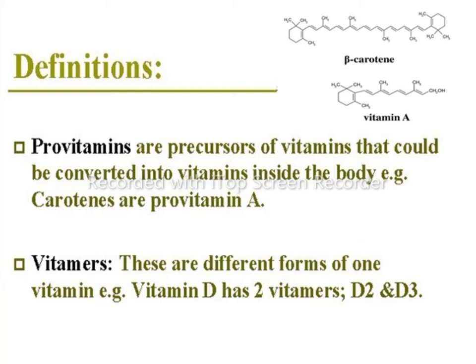There are two related terms: provitamins and vitamins. Provitamins are chemically similar to vitamins; during metabolism this substance is transferred into vitamins. For example, beta-carotene from carrot has a structural part of vitamin A — after entering the human body, carotene is converted into vitamin A, hence carotene is a provitamin A. Vitamins are different forms of one vitamin; for example, vitamin D has two vitamins, vitamin D2 and vitamin D3.